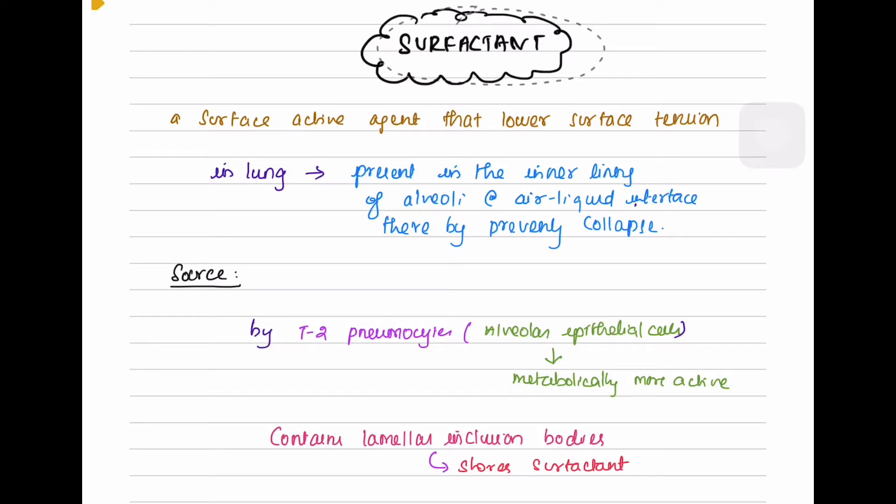Let's learn about surfactant today. Surfactant is a surface active agent that lowers surface tension in the lung. It is present in the inner lining of the alveoli at the air-liquid interface, thereby preventing the collapse of the alveoli.